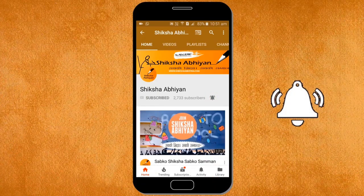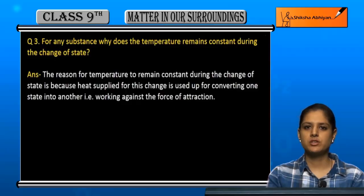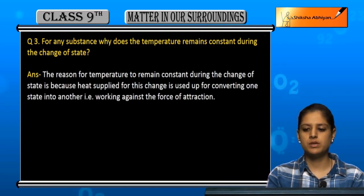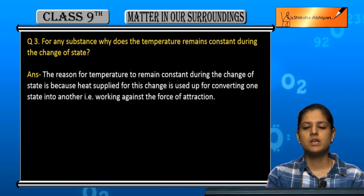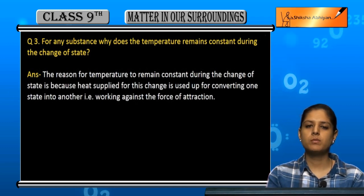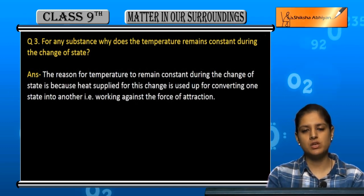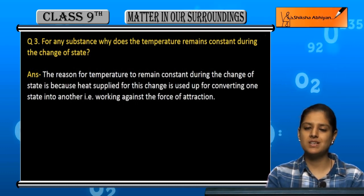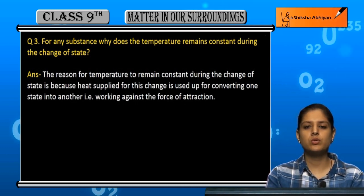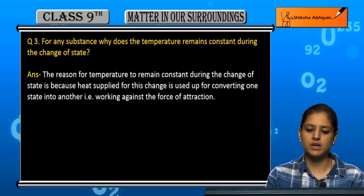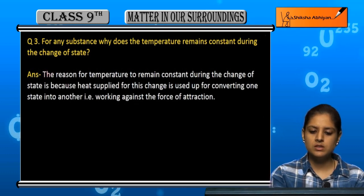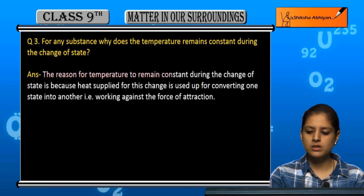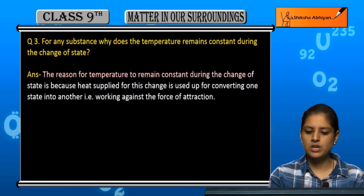Question number three: for any substance, why does the temperature remain constant during the change of state? Jab bhi koi bhi state kisi dousari state mein change hoti hai, so us substance ke liye jo temperature hai, us instant par constant kyun rehta hai? Yeh meh batana hai.